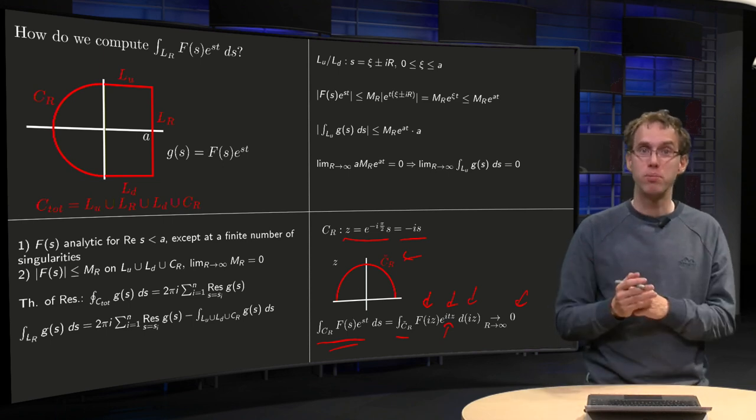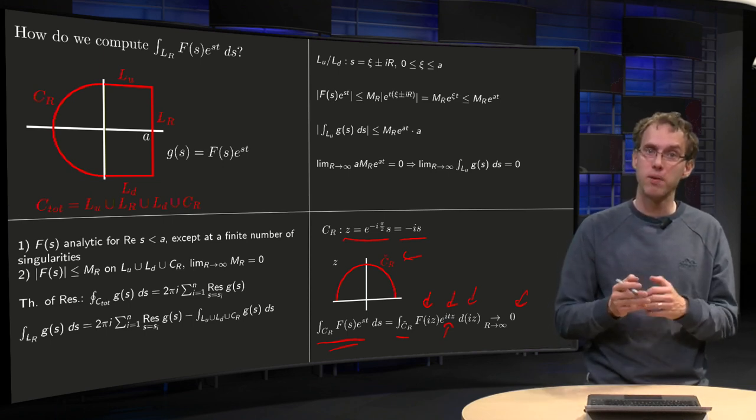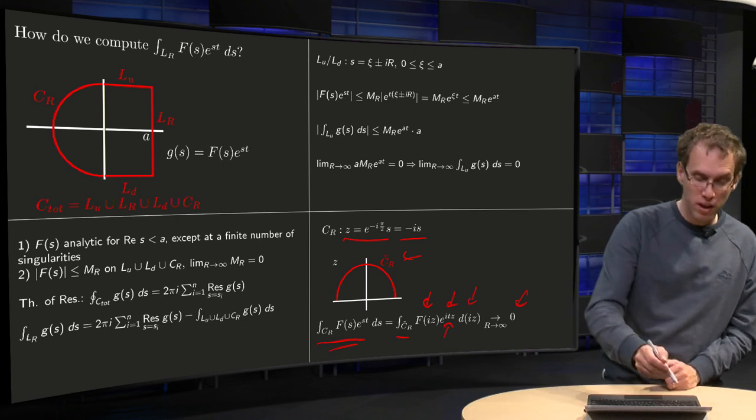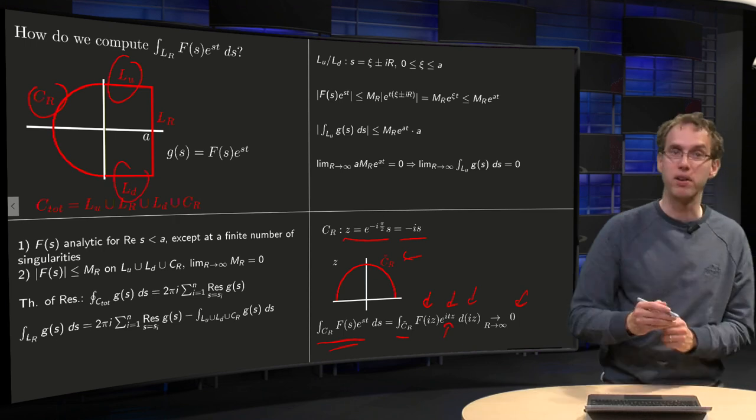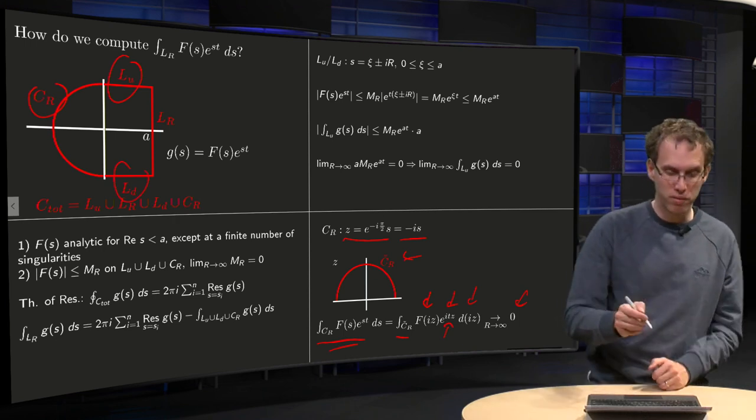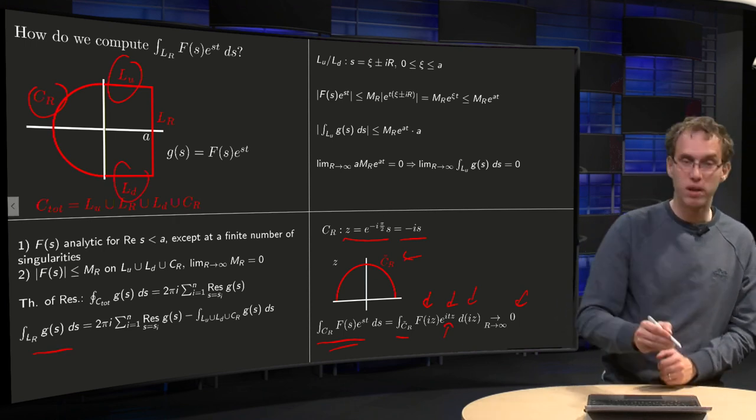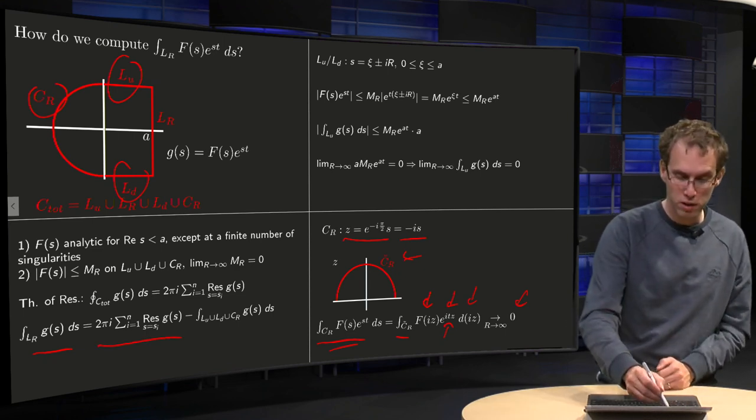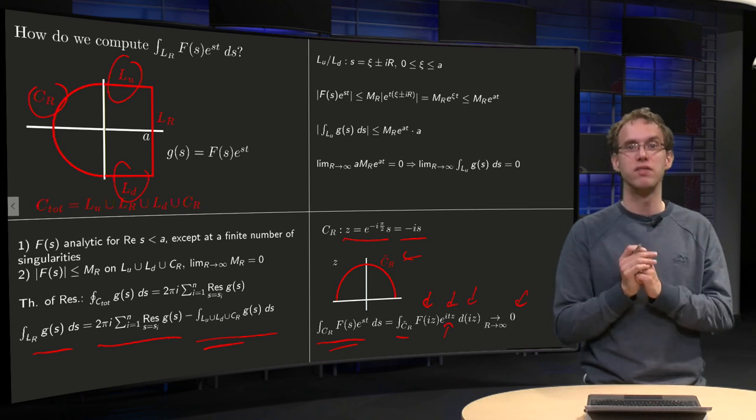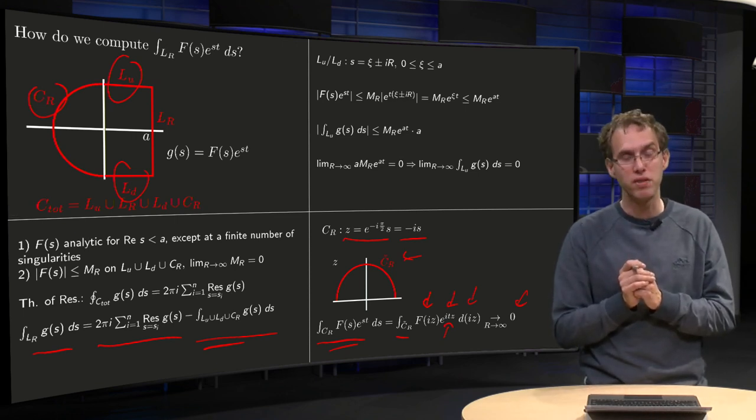So how do we compute the integral along L_R? If your function vanishes fast enough on C_R and L_up and L_down, then you can use the theorem of residues that integral along L_R G(s) equals 2πi times the sum of the residues, and this part is going to vanish if R is going to infinity.